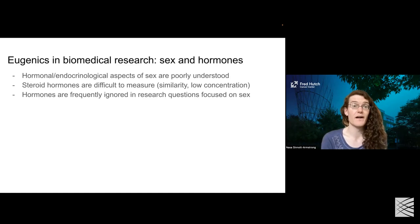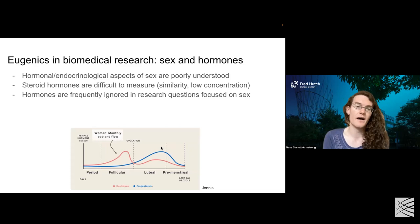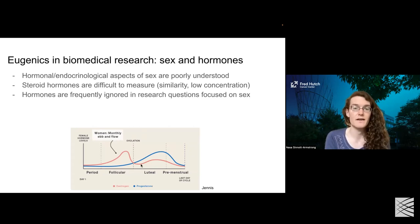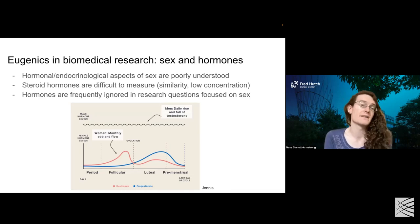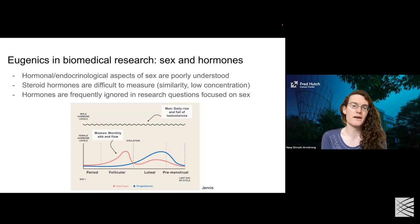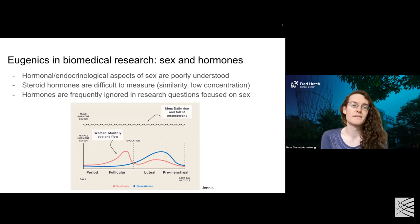This is true not just across different individuals, but hormones are also not super consistent within an individual either. This is probably most classically understood in the context of the menstrual cycle, where cisgender women and other individuals experience differences in the levels of estrogen and progesterone over time, usually on the order of one-month timeframes. This also happens in cisgender men, where you have daily rises and falls in testosterone levels throughout the day. Having a better understanding of hormones and enabling more research on hormones is something we can do to help separate biological sex and answer questions around individual experiences.